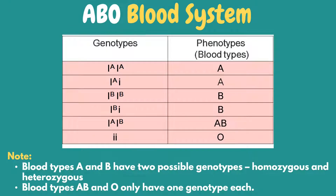ABO blood group system is the classification of human blood based on the inherited properties of red blood cells, or erythrocytes, as determined by the presence or absence of the antigens A and B, which are carried on the surface of the red blood cells. Persons may have blood type A, type B, type O, or type AB.